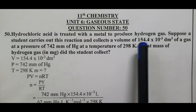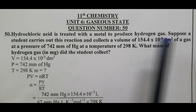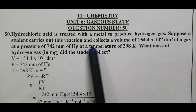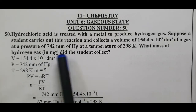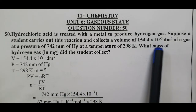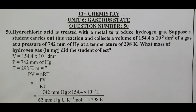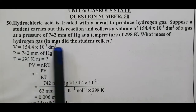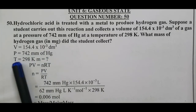The student collects a volume of 154.4 × 10⁻³ decimeter cubed of gas at a pressure of 742 mmHg and a temperature of 298 Kelvin. We need to find the mass of hydrogen gas in milligrams that the student collected. Volume = 154.4 × 10⁻³ dm³, pressure = 742 mmHg, temperature = 298 K.